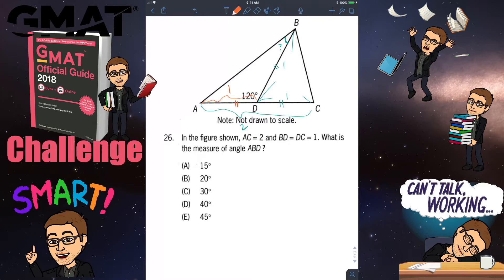So this triangle ABD is actually an isosceles triangle. If the top angle is 120 degrees, then the two base angles will be 30 each.